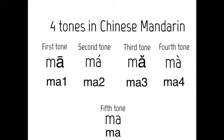And the last is the fourth tone. The mark above the letter goes downward, meaning you read it with a falling tone. Fourth tone sounds like: ma, ma, ma. So that's how these four tones are read.